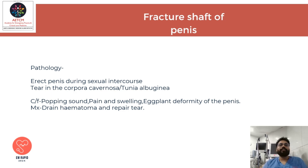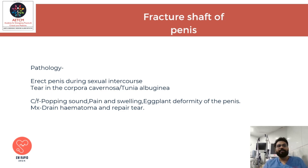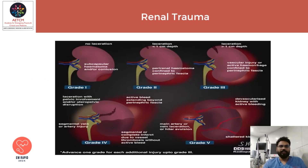Fracture of the shaft of the penis occurs when an erect penis during sexual intercourse sustains a tear in the corpora cavernosa and tunica albuginea. Clinical features include a popping sound, pain and swelling around the penis, and an eggplant deformity of the penis. Management is drainage of the hematoma and repair of the tear.